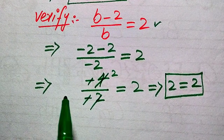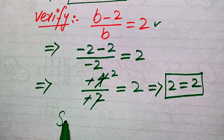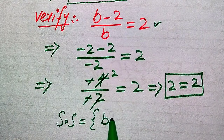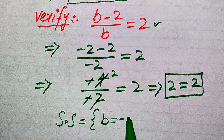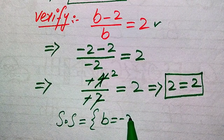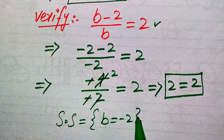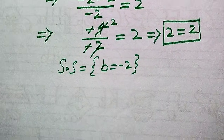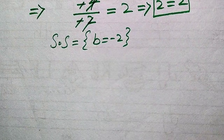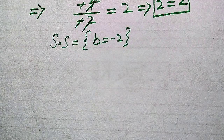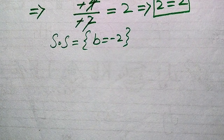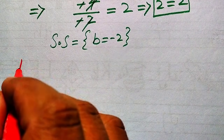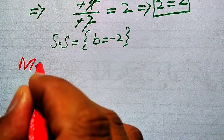So we conclude that the solution set of this equation is b equals minus 2. This is the only solution obtained from the first method. Now we will again solve this problem using the second method.